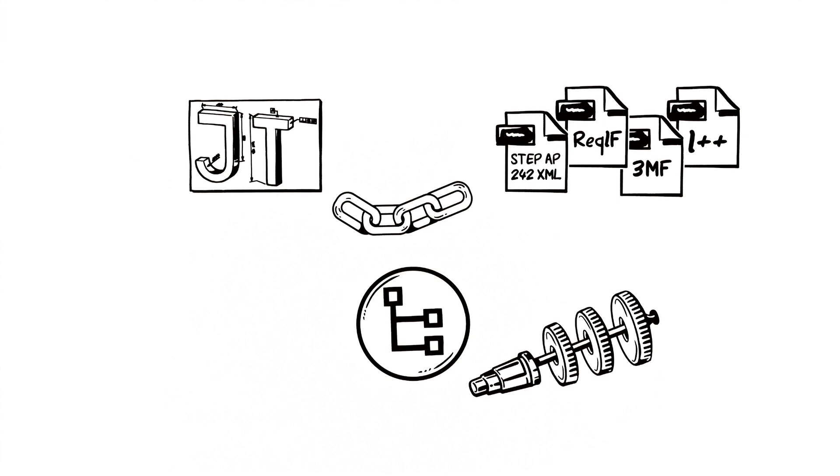To make JT even more versatile, other standardized formats can be procedurally or directly linked to it. For example, in order to map assembly structures, or to integrate requirements management and visualize not only individual components, but also the requirements assigned to them.